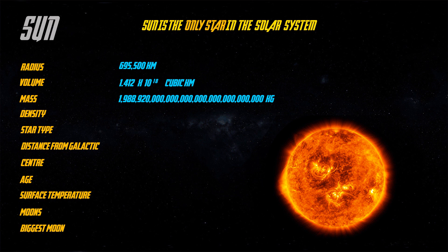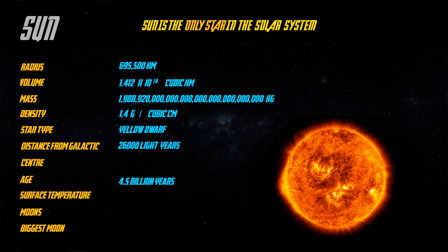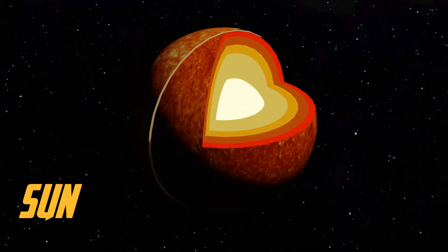The Sun takes 26,000 light-years to complete its rotation around the galactic center. It has no moon and has mainly five layers.